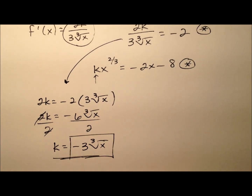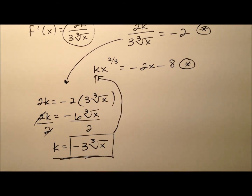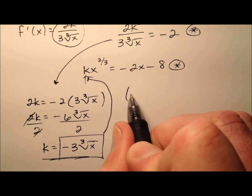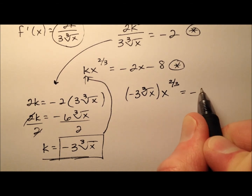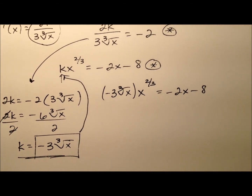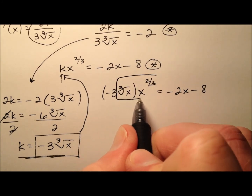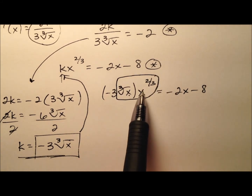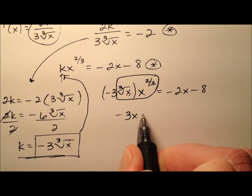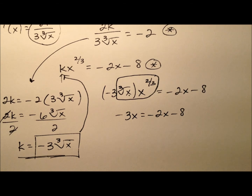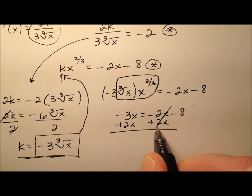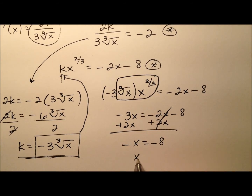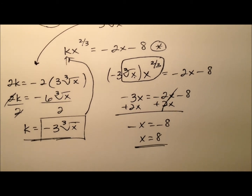Let's take k equals negative 3 times the cubed root of x and plug it into the other equation. So we have negative 3 times the cubed root of x times x to the two-thirds equals negative 2x minus 8. The cubed root of x times x to the two-thirds simplifies to x. Adding 2x to both sides gives negative x equals negative 8, so x equals 8.